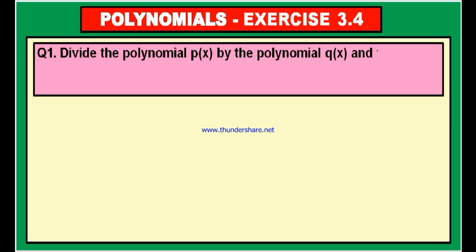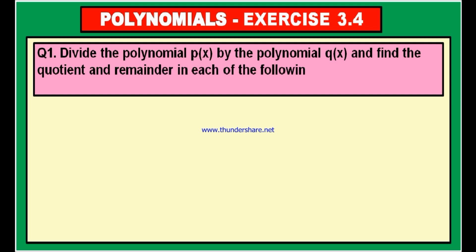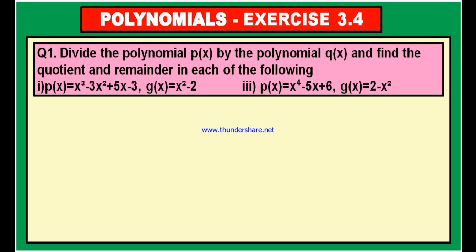Divide the polynomial P of X by the polynomial G of X and find the quotient and remainder in each of the following cases. The first bit: P of X is equal to X cube minus 3X square plus 5X minus 3 and G of X is equal to X square minus 2. And third bit: P of X is equal to X power 4 minus 5X plus 6 and G of X is equal to 2 minus X square.